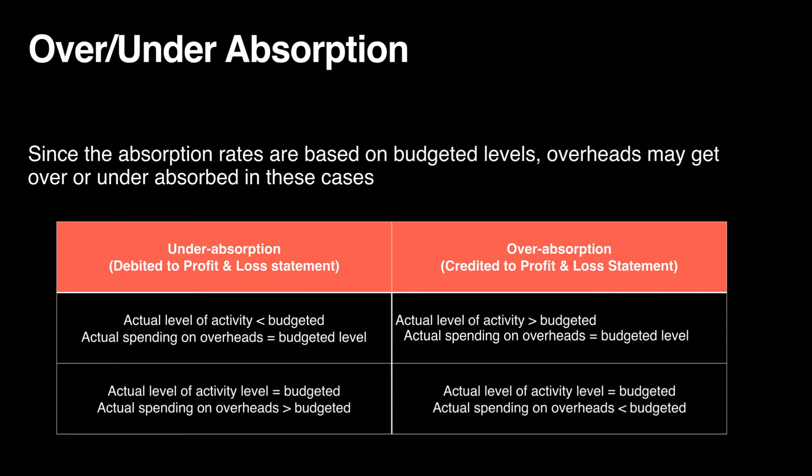We can have two cases: under absorption, which means it was a loss to the firm, and over absorption, which means it was a profit to the firm. Firms can make a loss or a profit depending on different scenarios.